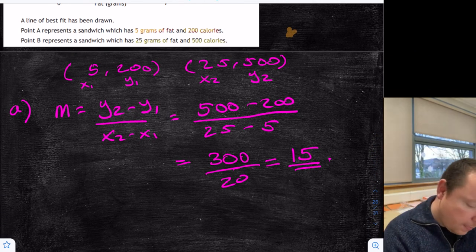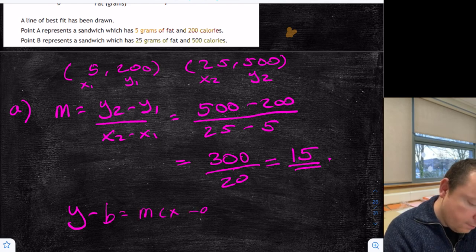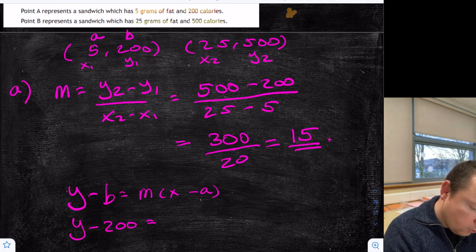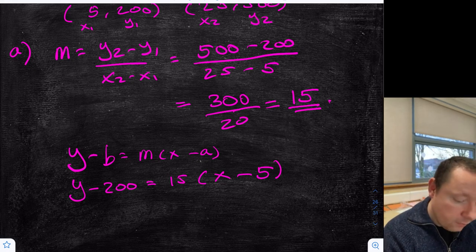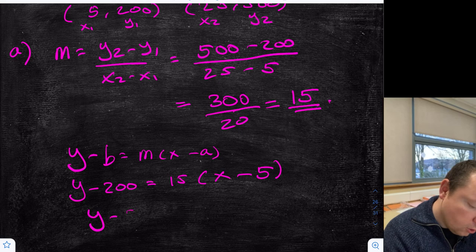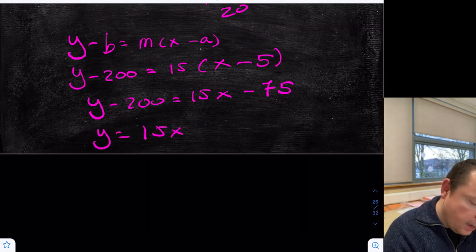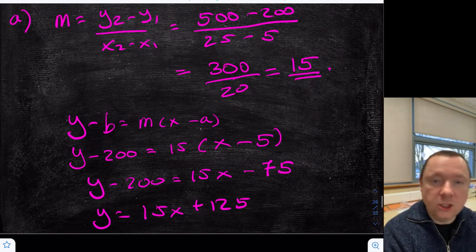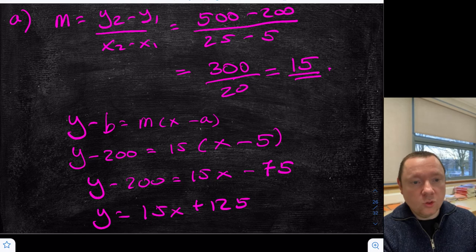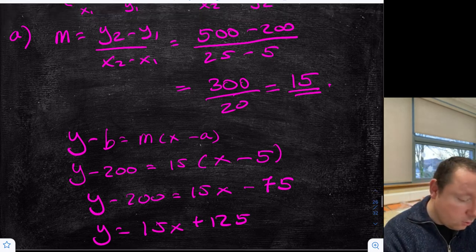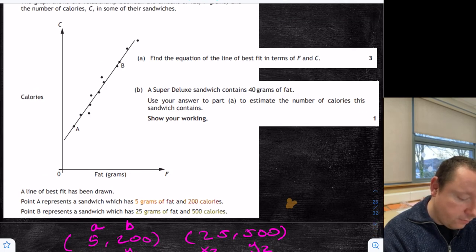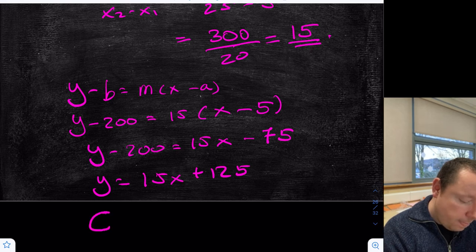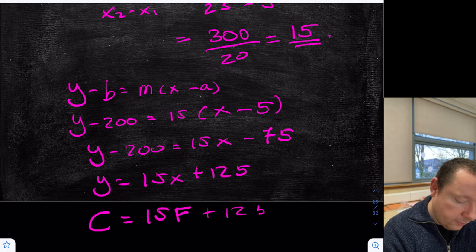I always use y minus b equals m times x minus a, where (a, b) is a point. Substituting in the first point: y minus 200 equals 15 times x minus 5. Tidying that up: y minus 200 equals 15x minus 75. Moving the 200 across: y equals 15x plus 125. And then for the final mark, we swap y and x for the proper terms — y is C for calories and x is F for fat. So: C equals 15F plus 125.